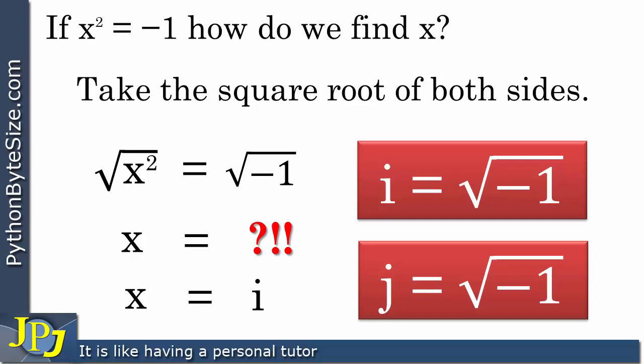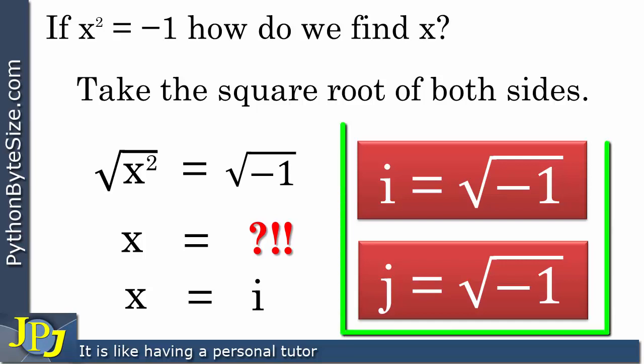I will be using lowercase j throughout this playlist on complex numbers — I don't use uppercase J. But to be sure we understand, these two are effectively the same thing. It's just that mathematicians would use i and in Python we use j to represent the imaginary number part of a complex number, bearing in mind that j is the symbol that represents the square root of minus one.